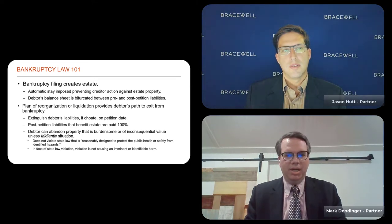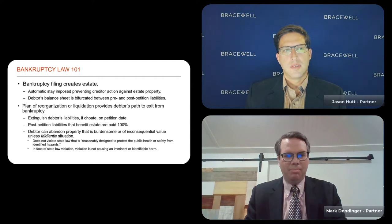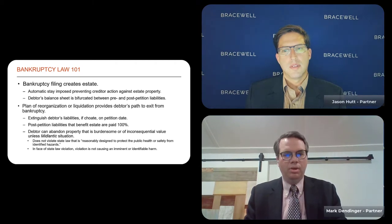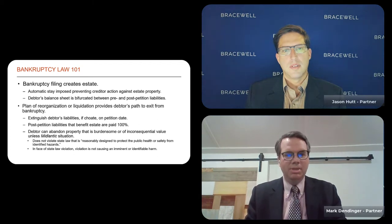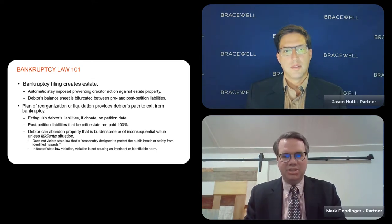When any company in the United States — or an international company that files for bankruptcy in the United States — files for bankruptcy, the concept of a bankruptcy estate is created. You can draw a circle around that debtor that has just filed for bankruptcy, and all of the debtor's property becomes part of the debtor's bankruptcy estate. The automatic stay is created at that same moment in time, where the debtor enjoys what's called a breathing spell.